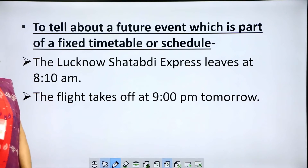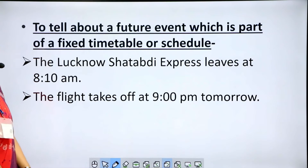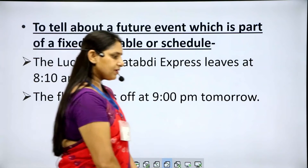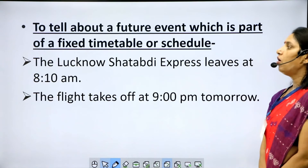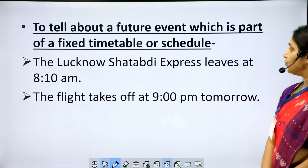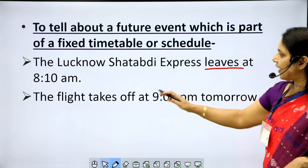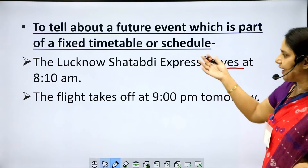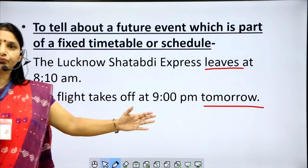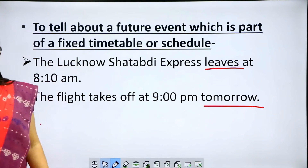To tell about a future event which is part of a fixed timetable or schedule. Example: 'The Lucknow Shatabdi Express leaves at 8:10 a.m.' It is going to leave tomorrow, but when we describe the schedule of the Shatabdi Express, we use simple present tense because it is part of the fixed schedule. 'The flight takes off at 9:00 p.m. tomorrow.' — same case; instead of future tense, simple present is used because it is a fixed schedule.